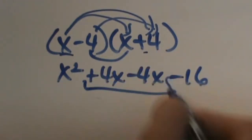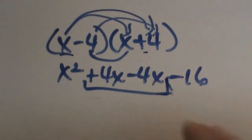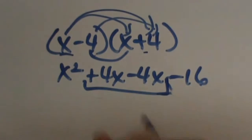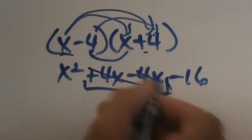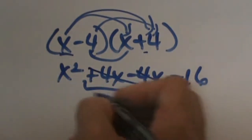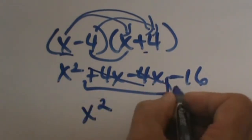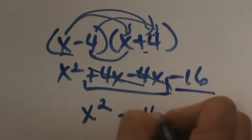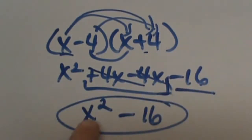What do you notice about the middle terms? We had one of these in the last lesson. The signs are opposite so they are going to cancel each other out, because 4x minus 4x is just zero. So all we have left is x squared and back here we have negative, or minus, 16.